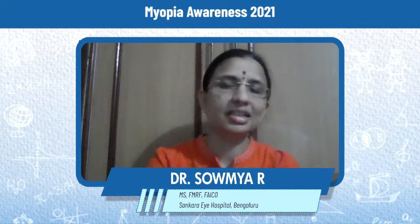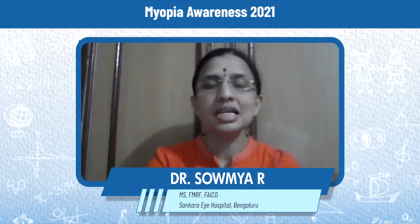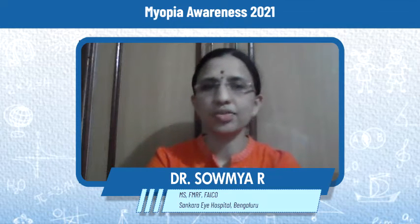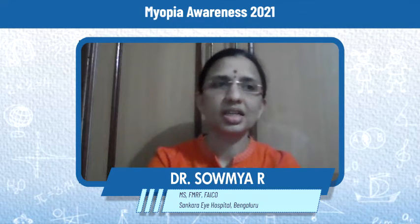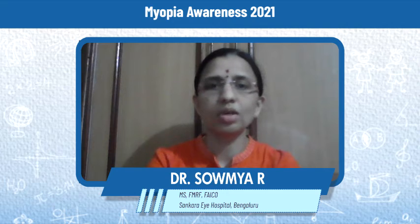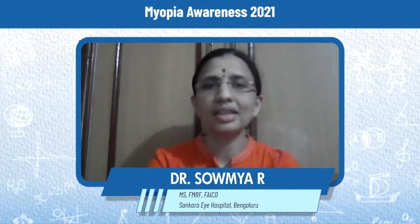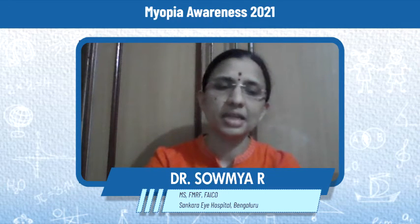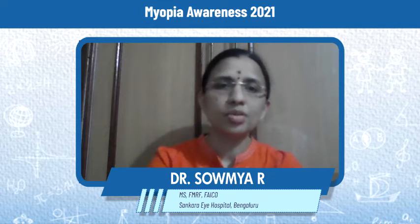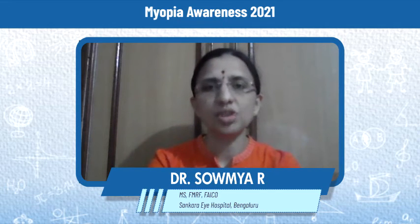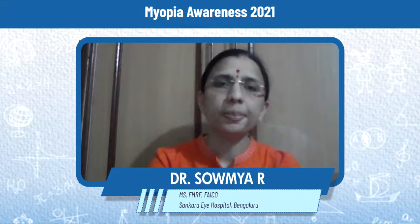This outdoor time could be on the balcony or terrace, where the child does any kind of physical activity — walking or anything in the morning — which will increase sunlight exposure. Second, increase the physical activity for the child, which also reduces the rate of progression of myopia.